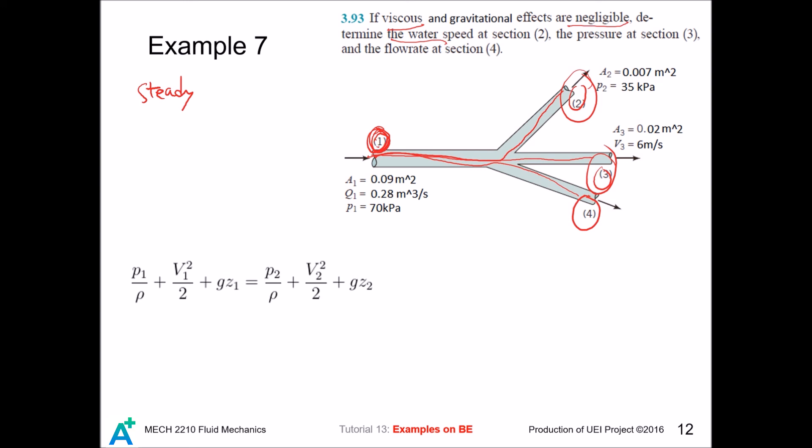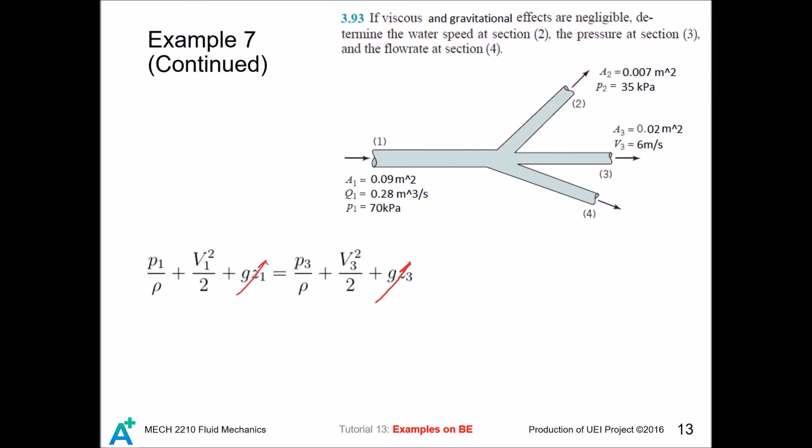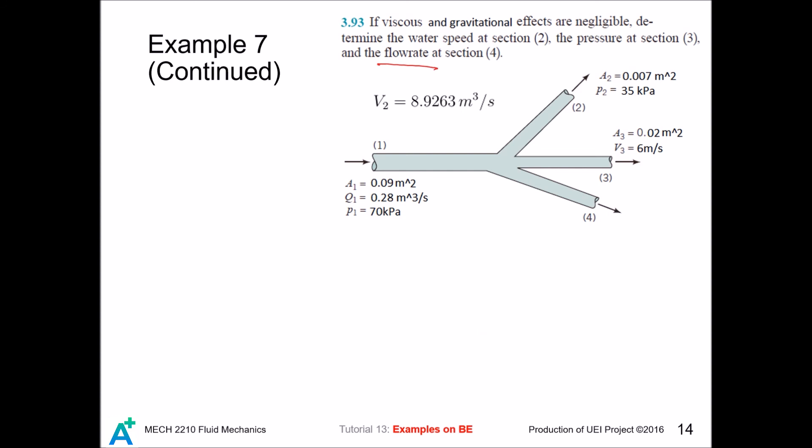So gravitational effect is neglected and we drop these two terms. Then we can plug in the values. V1 is the flow rate divided by the area and we continue to substitute the given data. Then we can solve for v2. Then we repeat the procedure to obtain the pressure at point 3. The last part asks for the flow rate and then we apply continuity equation at this node, which is just like KCL.